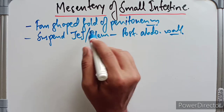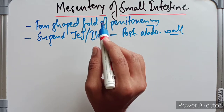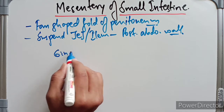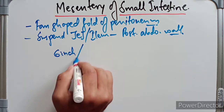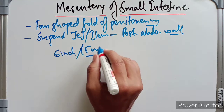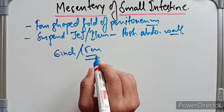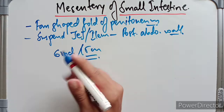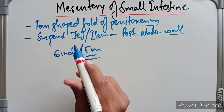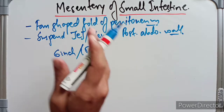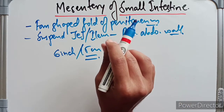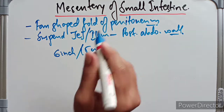The average width of the mesentery is about six inches or 15 centimeters. The maximum width extends to 8 inches or 20 centimeters in the central part, and it gradually diminishes towards the proximal and distal parts.